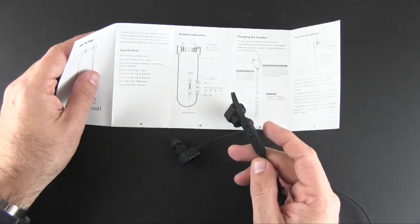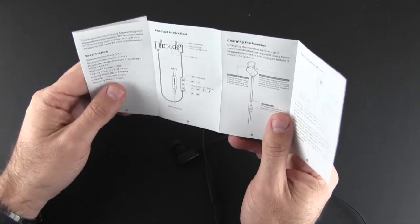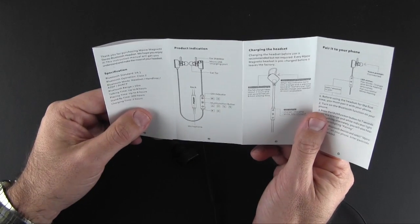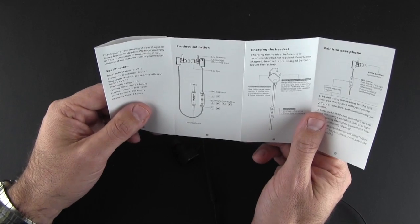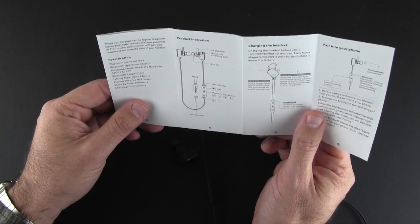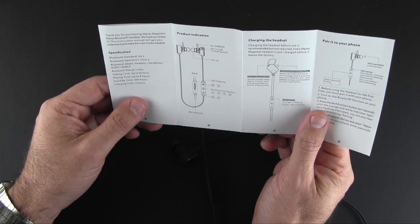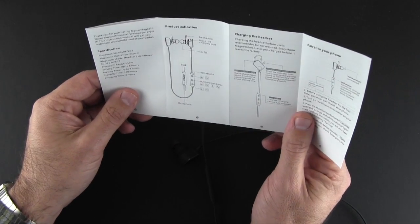These do have an inline remote, as you can see right here, which does a variety of functions, including fast forward and rewind, answer and reject calls, as well as raising and lowering the volume of your device, which is kind of neat.